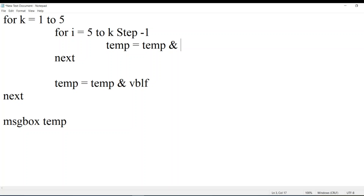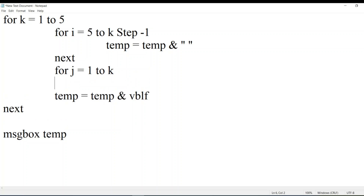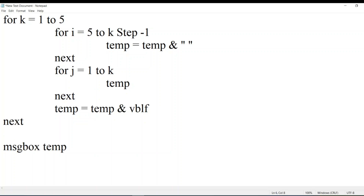We'll be concatenating spaces in the second for loop similarly. For variable names I use j, k, and i — these are commonly used variables, though you can give proper variable names if you want. Step one is the default so you can write it explicitly or leave it as default. I've set up three loops; I'll explain the code in a second. Temp equal to temp ampersand — concatenating the stars. Now our proper pyramid is ready. Let me save this.